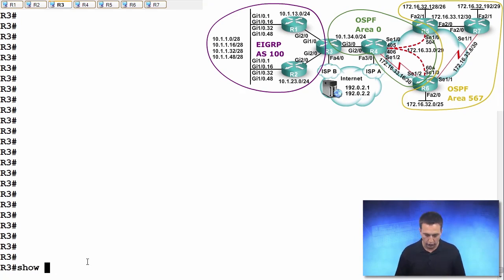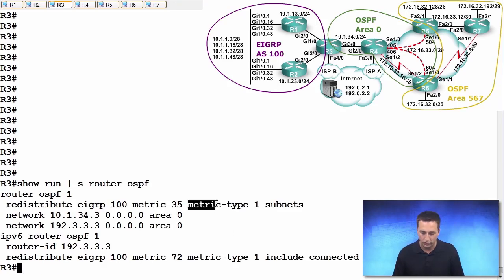So let's look at the output of show run pipe to section router OSPF. And we can see from this output that the metric type has been attached right to the redistribution command. So redistribute EIGRP 100, we set the metric to 35 during redistribution, and the metric type is 1 that we've set here.